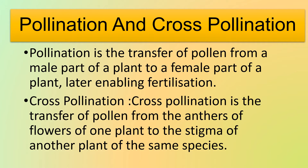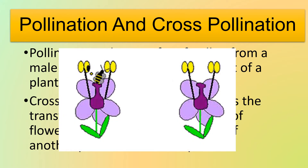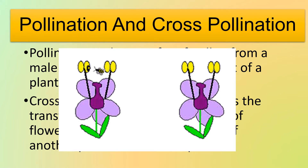Pollination is the transfer of pollen from a male part of a plant to a female part of a plant, later enabling fertilization. Cross-pollination is the transfer of pollen from the anthers of the flower of one plant to the stigma of another plant of the same species. Here we can see an example of cross-pollination where the pollen sticks to the bee's body, and later when the bee starts to drink the nectar from another flower, it sticks on to the stigma — hence this shows cross-pollination.